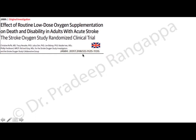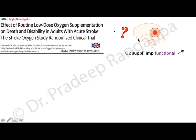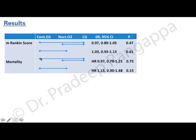When comparing modified Rankin Score between continuous oxygen and control there was no difference; between nocturnal oxygen and control there was no difference; between continuous and nocturnal oxygen there was no significant difference. There was no mortality difference between any of the three groups either. All hazard ratios were hovering around one, confirming no benefit from any oxygen regimen.